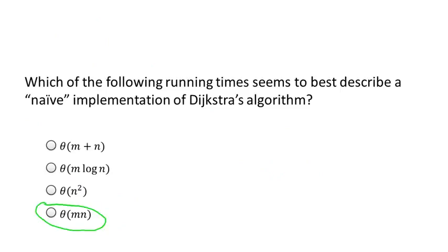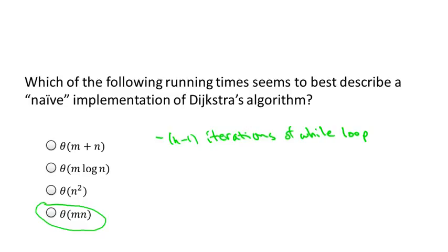The correct answer is the fourth option: the straightforward implementation gives a running time proportional to M times N, the product of edges and vertices. There are N minus one iterations of the while loop, since the algorithm terminates once every vertex is in X. Each iteration does a linear scan through all edges — checking if each is eligible (tail in X, head outside X) using an auxiliary Boolean variable — and by exhaustive search finds the minimum Dijkstra score. We can compute each Dijkstra score in constant time per edge.